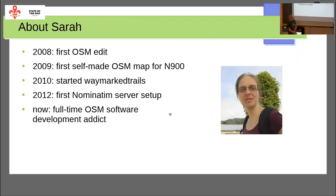A little bit about me: I did my first edit in 2008, then in 2009 I started with that map you just saw. When I was done with the railways, I thought the hiking trails are a good next step, so I started making another map called Waymark Trails. In 2012, there was too much beer at Stammtisch in Zurich, and somebody suggested I could take over the geocoding server, which I did. From there on it was more and more development in OSM, so nowadays I'm a full-time developer.